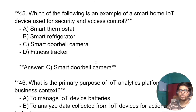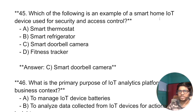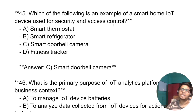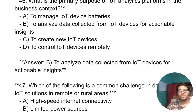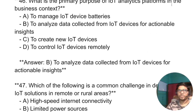Which of the following is an example of a smart home IoT device used for security and access control? The answer is: a smart doorbell camera.